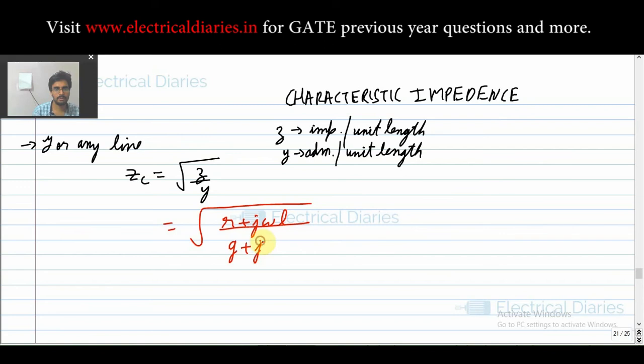And Y is G plus jωC. This is the whole thing under root, so this is your characteristic impedance. And here we have considered a line with losses because R is considered.